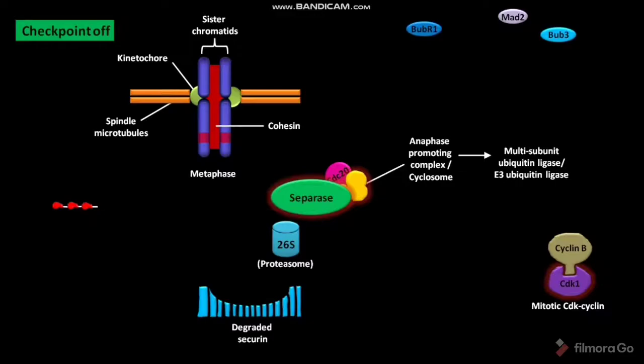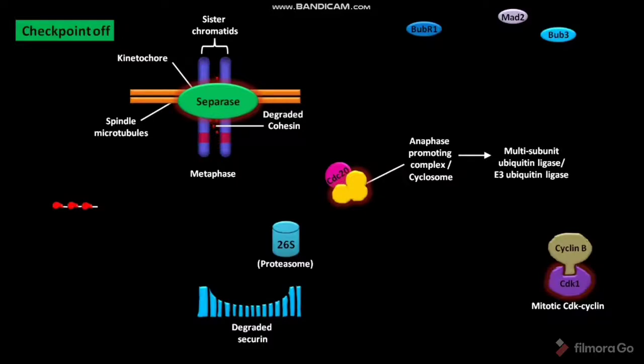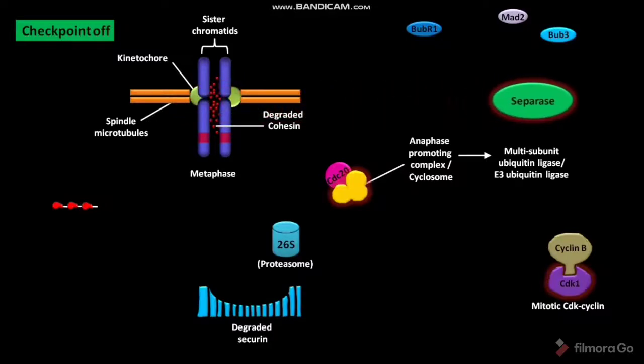The activated separase then degrades cohesin protein and produces degraded cohesin. The activated separase then separates from the sister chromatids. Due to cohesin degradation, the linkage between sister chromatids breaks.